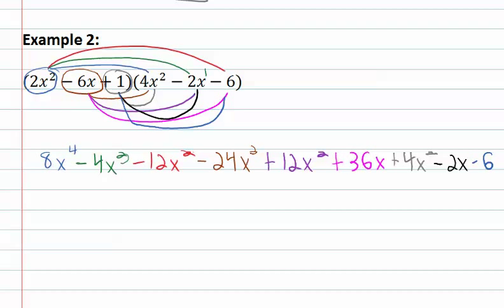Now all we have to do is combine a lot of like terms. We've got 8x to the 4th, there's nothing like it. Negative 4x cubed is like the negative 24x cubed. That gives us negative 28x cubed.